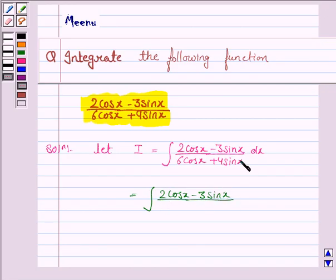Taking 2 common from the denominator, it becomes 2 into 3cosx plus 2sinx dx.